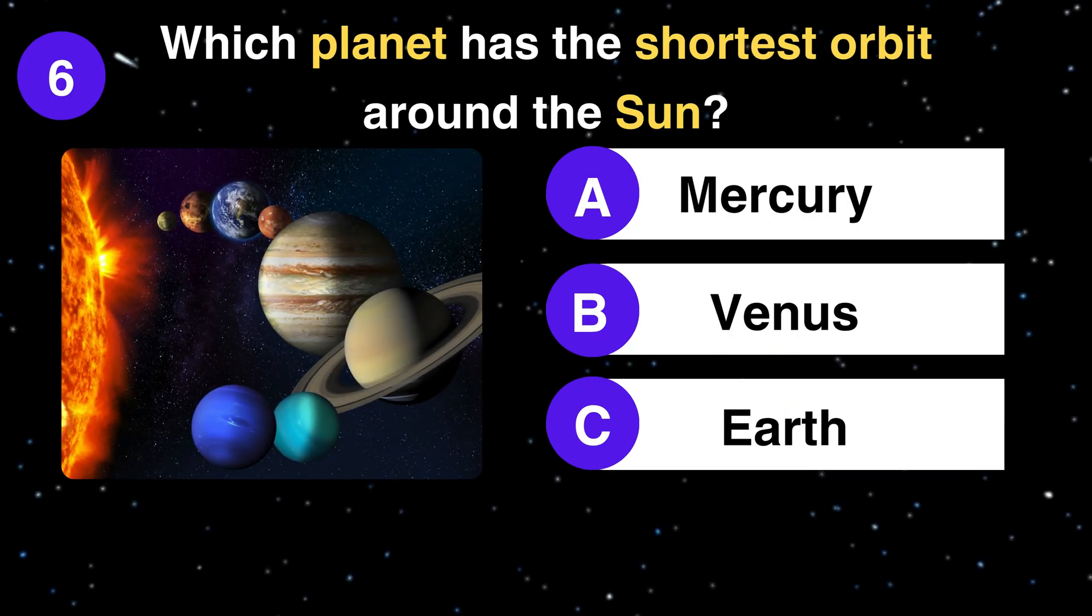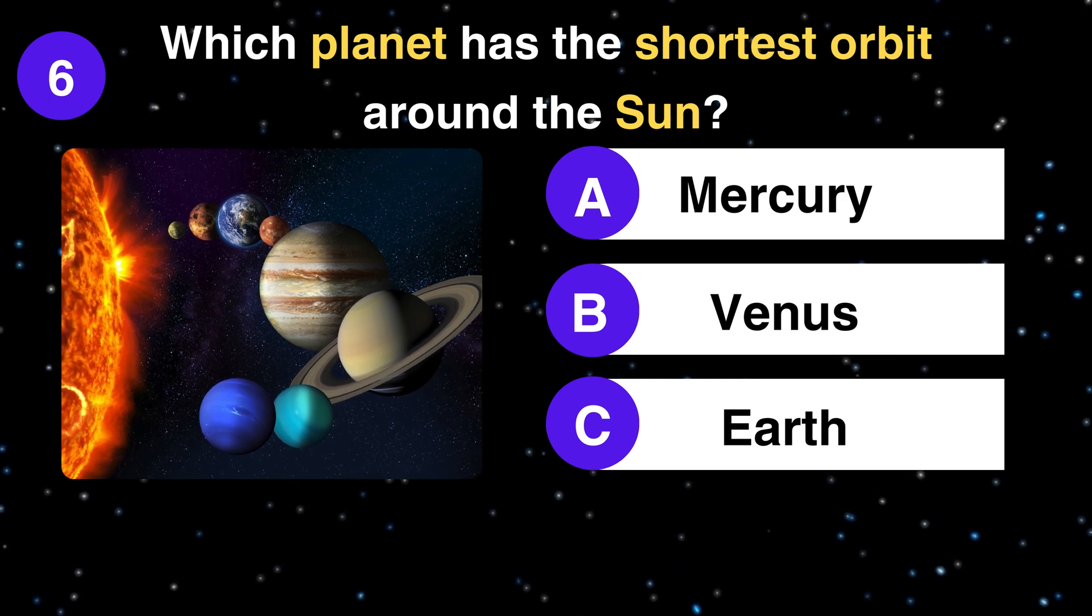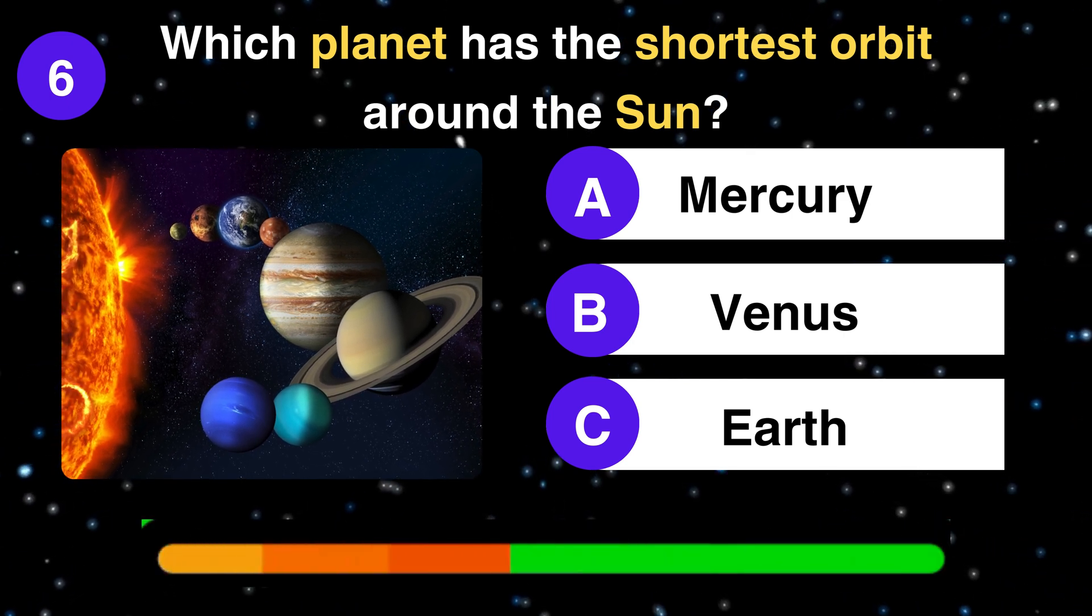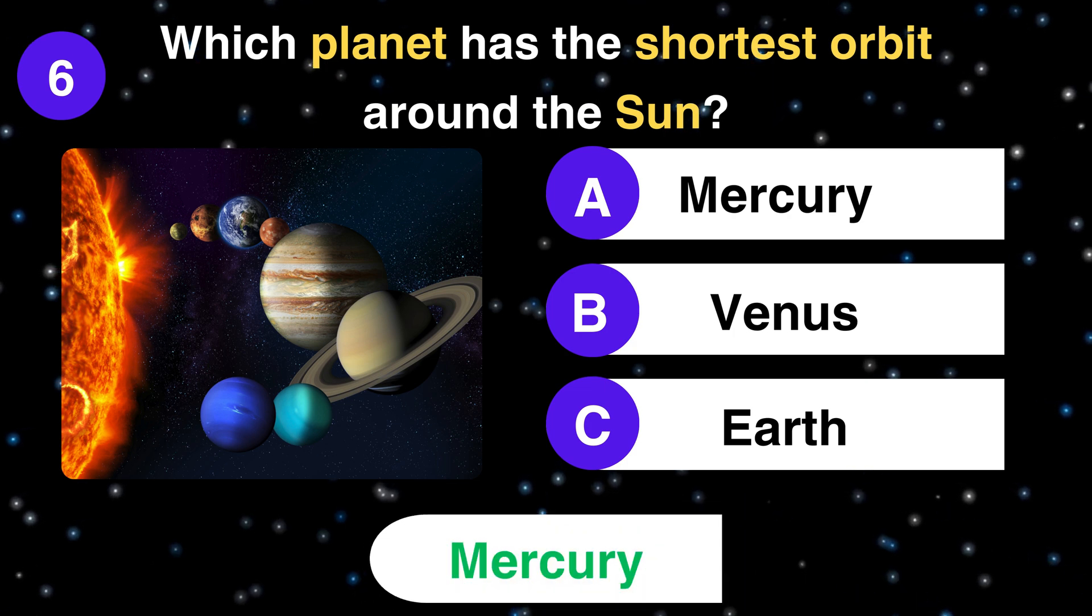Which planet has the shortest orbit around the sun? Mercury, Venus, or Earth? Mercury.